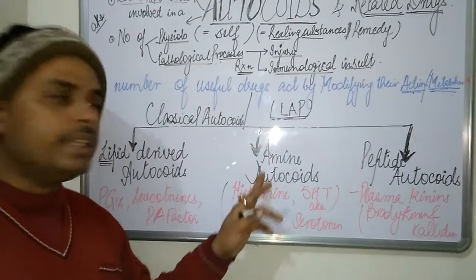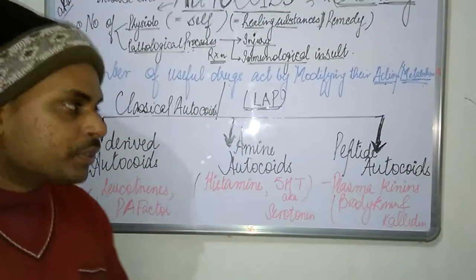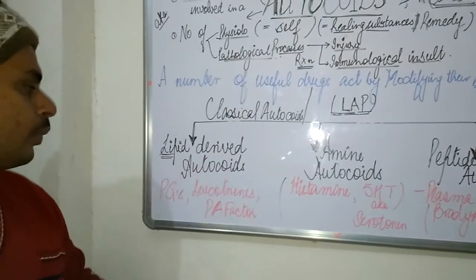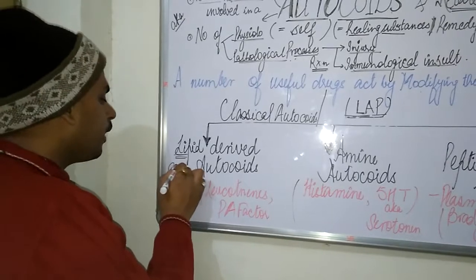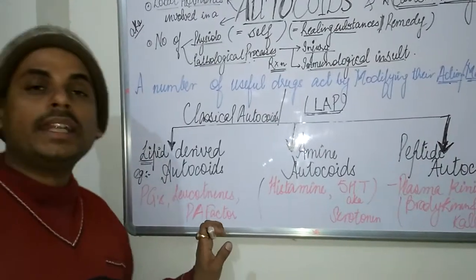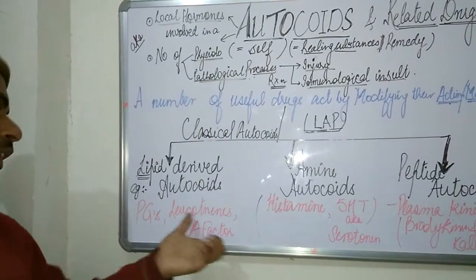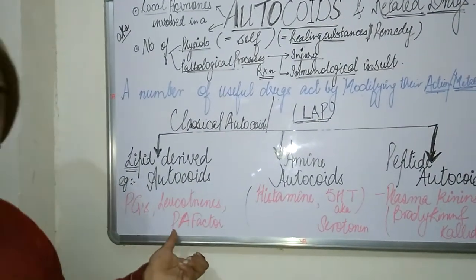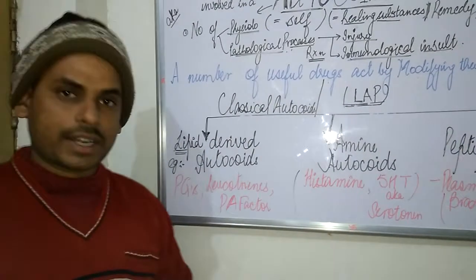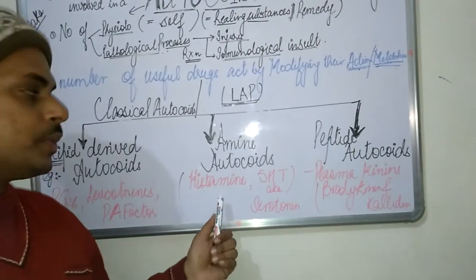The lipid-derived autocoids commonly comprise prostaglandins, leukotrienes, and platelet activating factor. These are the three main important classes of compounds under the heading of lipid-derived autocoids.